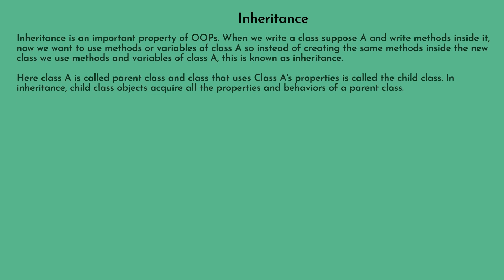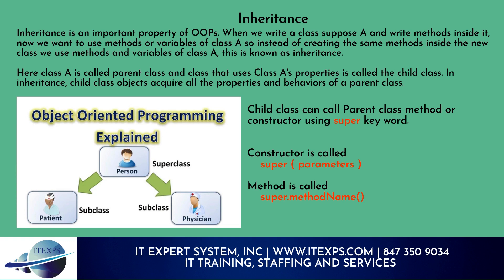Now let's talk about inheritance. Inheritance is an important property of OOP. When we write class A with methods inside it, and we want to use those methods or variables in a new class, instead of recreating them we use class A's methods and variables — this is known as inheritance. Class A is called the parent class, and the class that uses class A's properties is called the child class. Child class objects acquire all the properties and behaviors of the parent class. The child class can call a parent class method or constructor using the 'super' keyword: super(parameters) for constructors, super.methodName() for methods.